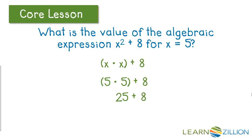We multiply before we add. So, 25 plus 8 and 25 plus 8 is 33. So, the value of the algebraic expression x squared plus 8 for x equals 5 is 33.